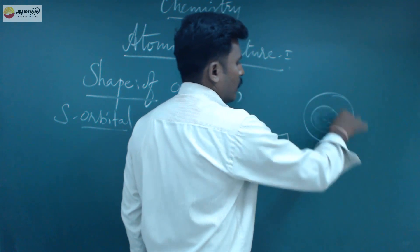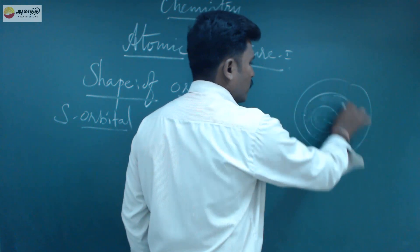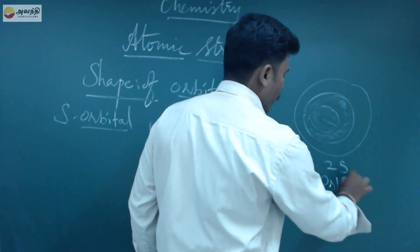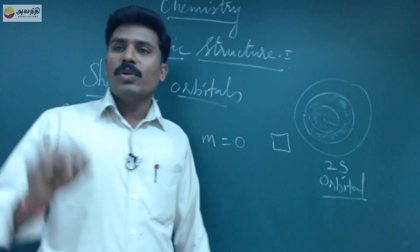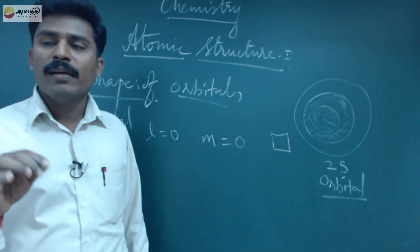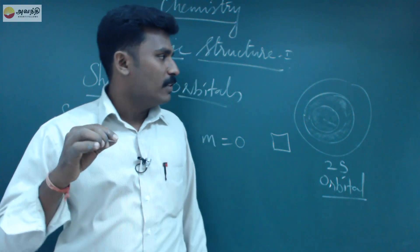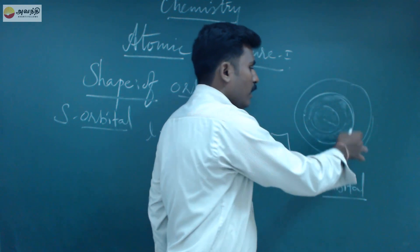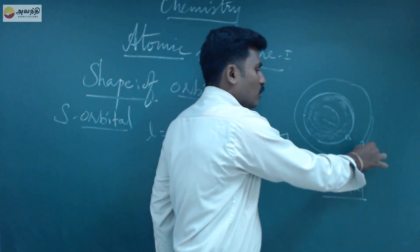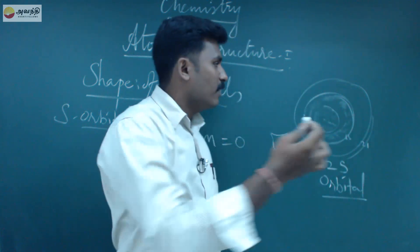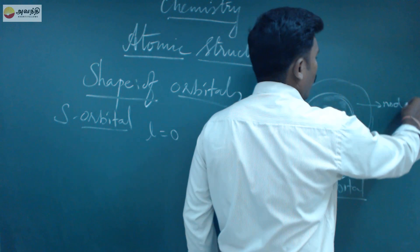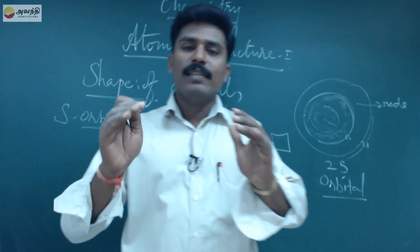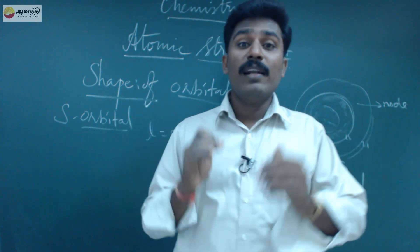This is a 1s orbital and this is a 2s orbital structure. The next question is what is a node? A node means where the probability of electron is zero. In between 1s and 2s there is a gap where there is no electron. That place is called a node or nodal plane.